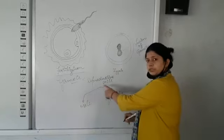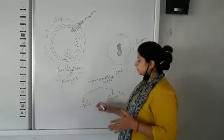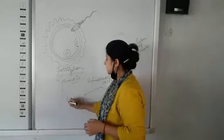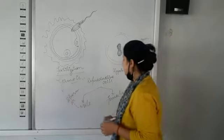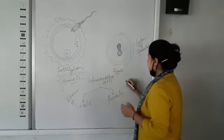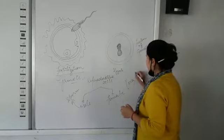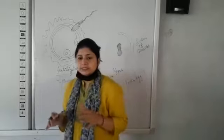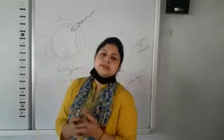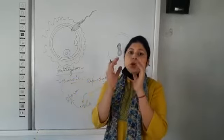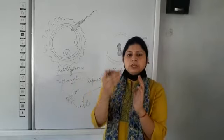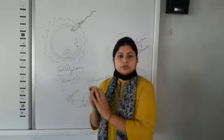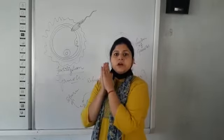The reproductive cell produced from the male is called sperm, whereas from the female it is known as ova or egg. Once a month, the egg is released from the ovary. The ovary is a part of the female reproductive system.